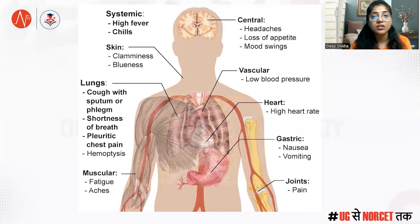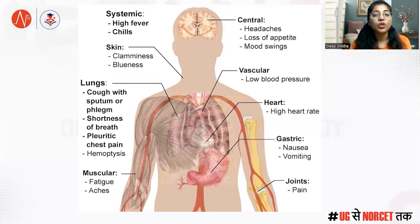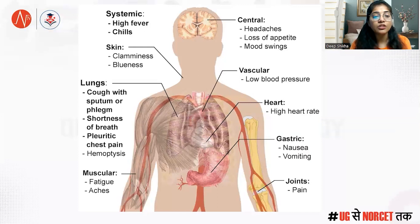There is a connection of the brain with every organ since the brain is the center. Regarding the vascular system, there would be low blood pressure. Regarding the heart, there would be a high heart rate. Gastric conditions such as nausea and vomiting are seen. There would also be pain in the joints, fatigue, and muscular ache.